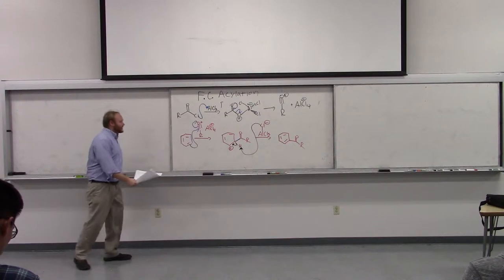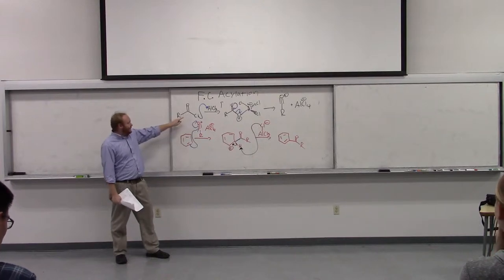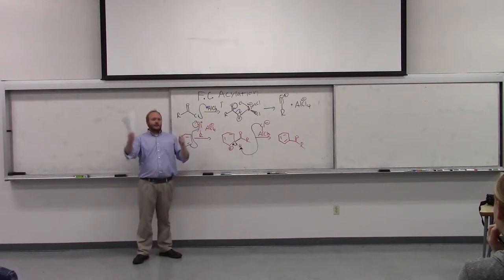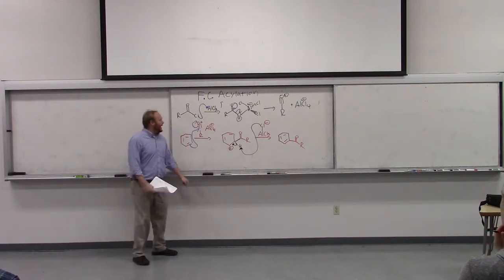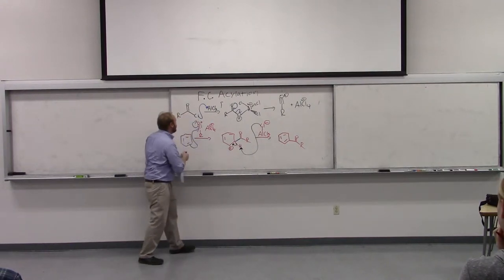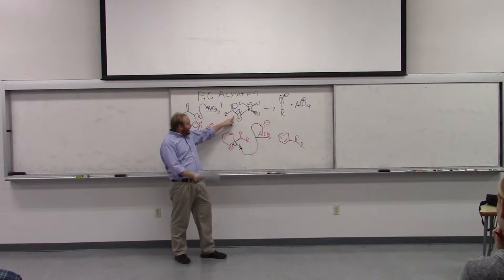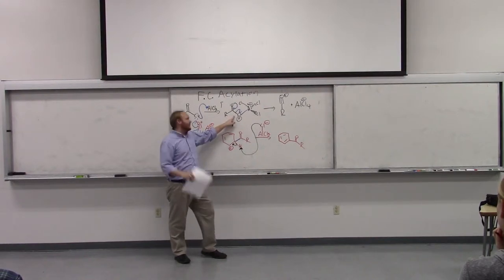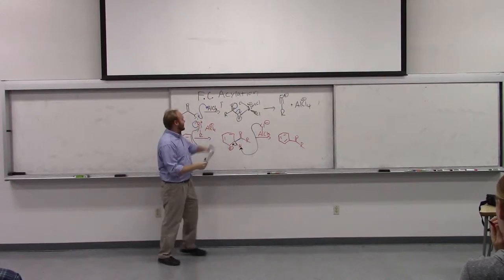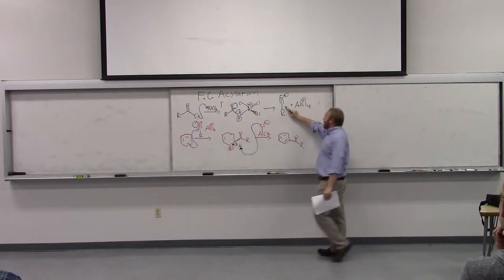Then we talked about the acylation. With acylation, we take an acid chloride — a carbonyl with one carbon-based substituent and one chlorine — and we take AlCl3, our Lewis acid. Just as with Friedel-Crafts alkylation, the lone pair of electrons on the chlorine are going to attack the AlCl3, giving us this intermediate. Then the lone pair on the oxygen kicks down, kicking off Cl⁻, giving us AlCl4⁻ minus.